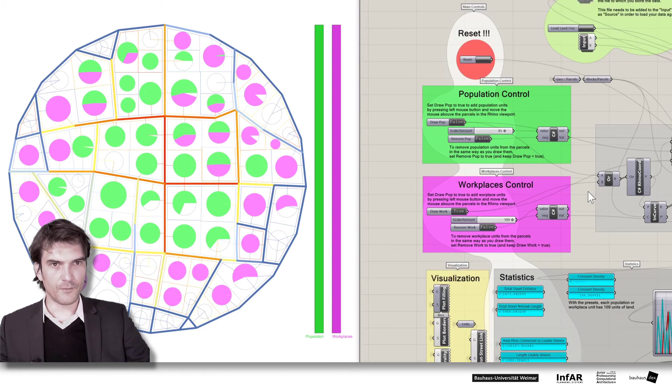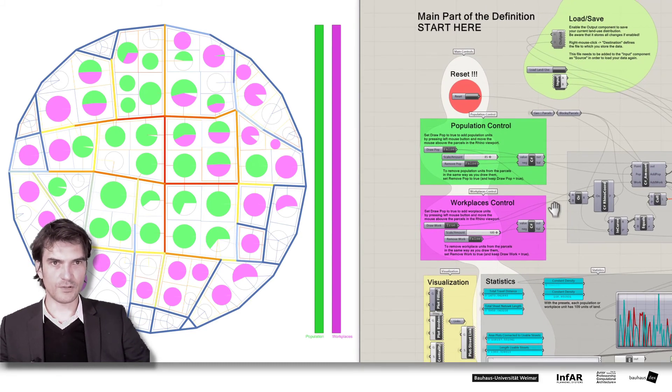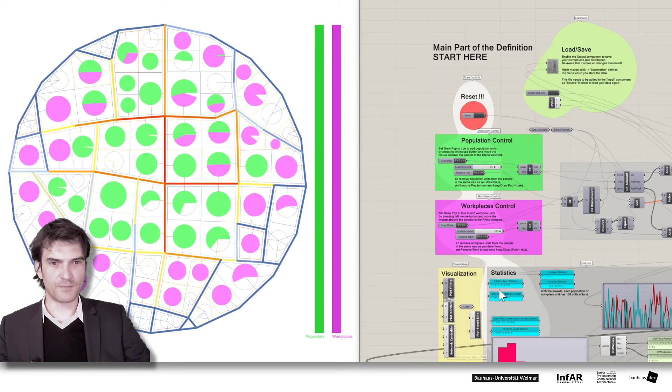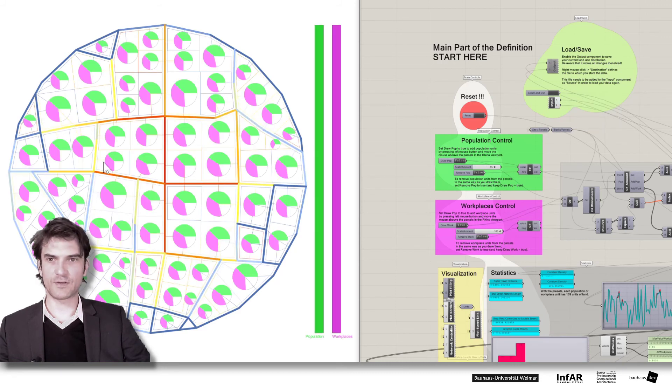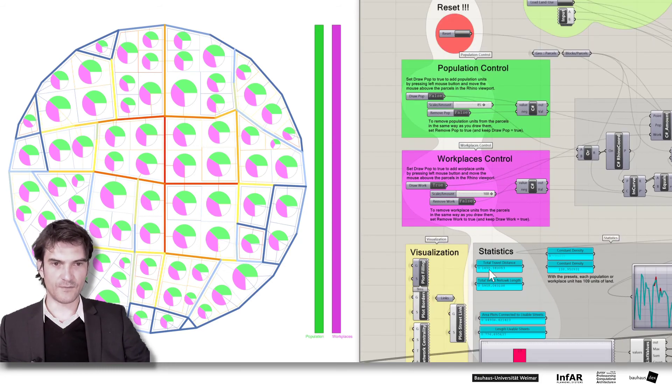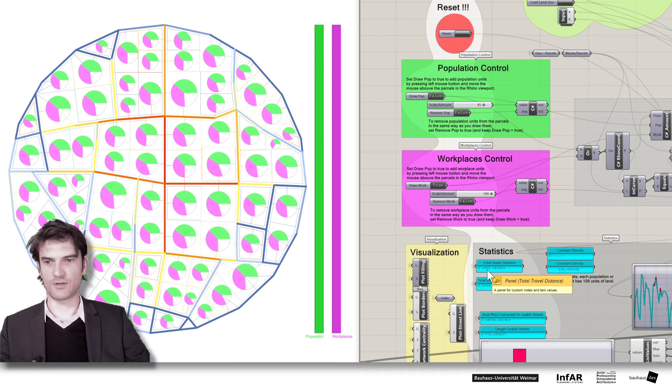And we can compare this to our null model. So the baseline model that you have to beat. If we reset it and I've preloaded the equally distributed land uses. If I load it, then you see we have an equal ratio of land uses in every plot. And this causes 1490 units of travel distance. So it's a little bit worse than my land use pattern that I generated before.